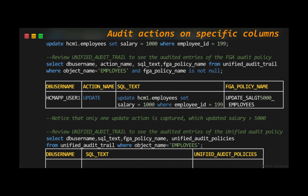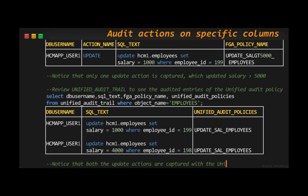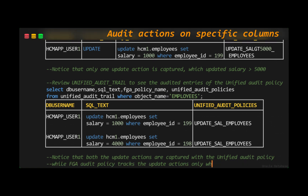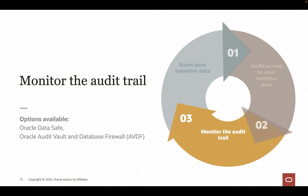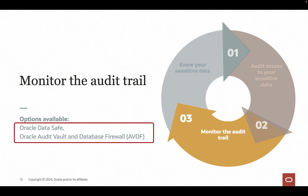In Oracle Database 23AI, where you have both options to do column-level auditing, you should be using unified auditing unless your audit requirement is one such typical use case. Now that we have seen how to create audit policies with precision for auditing sensitive data access, let's see how we can monitor the audit trail in near real time.